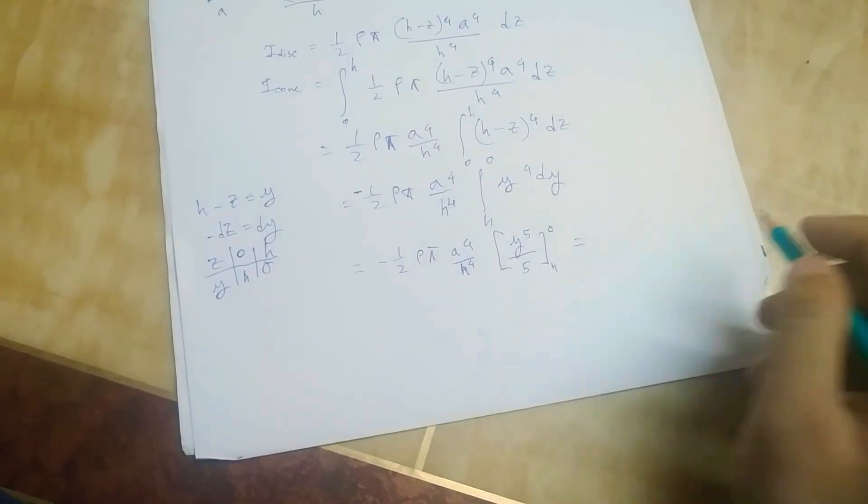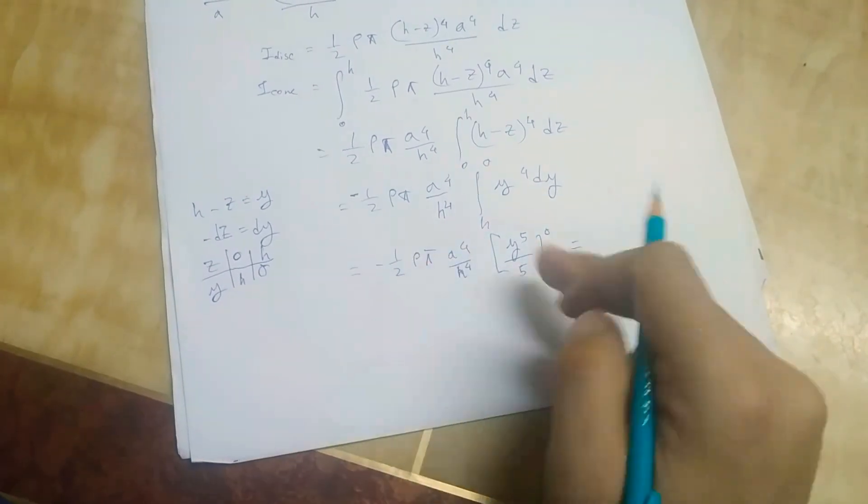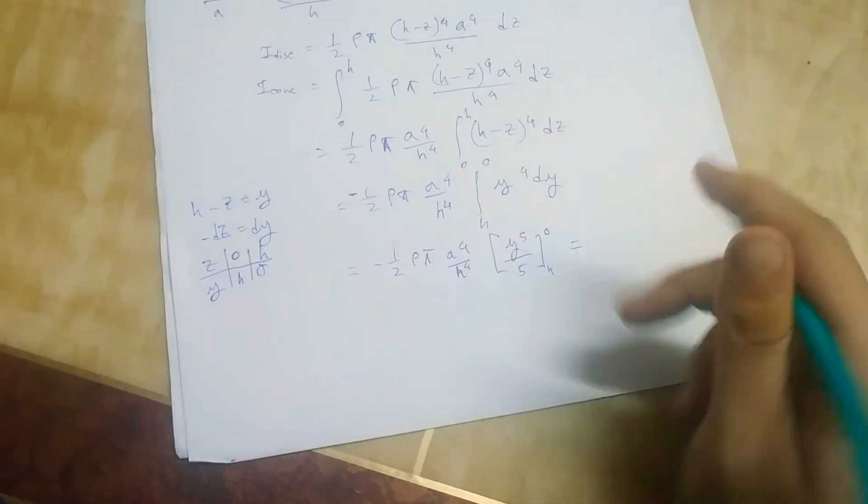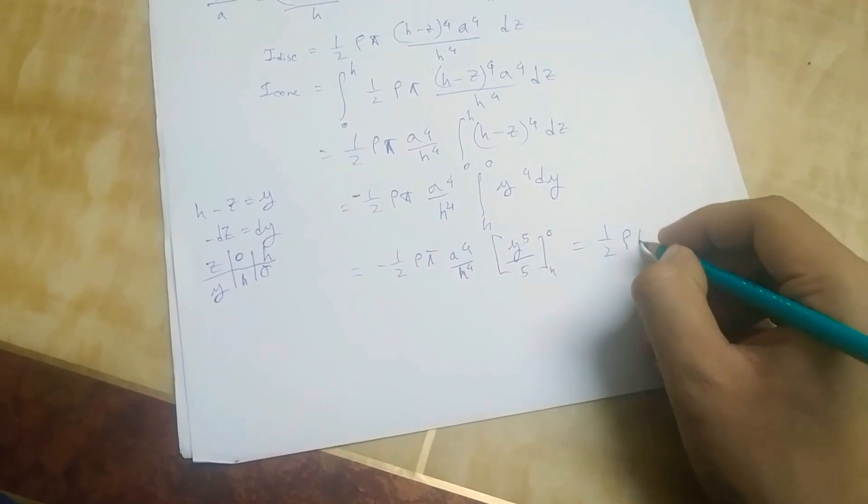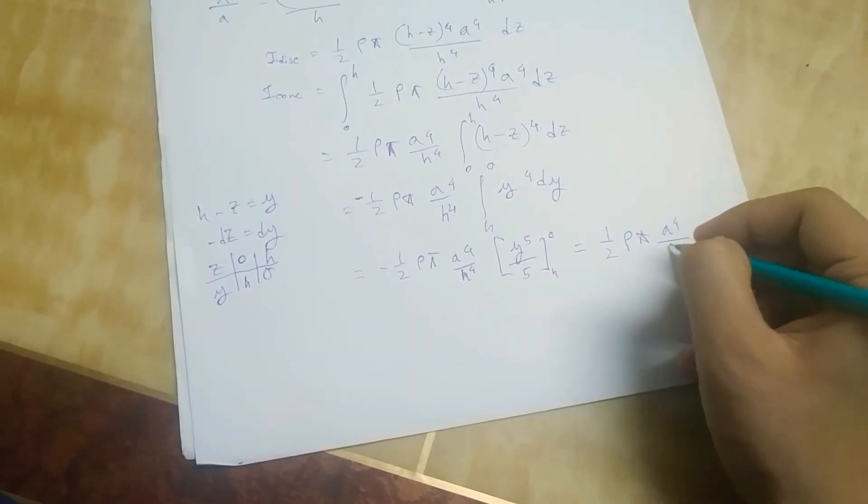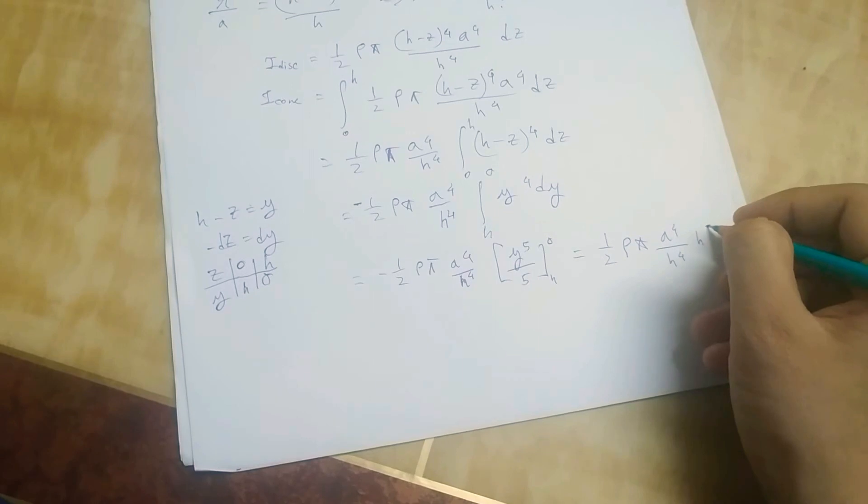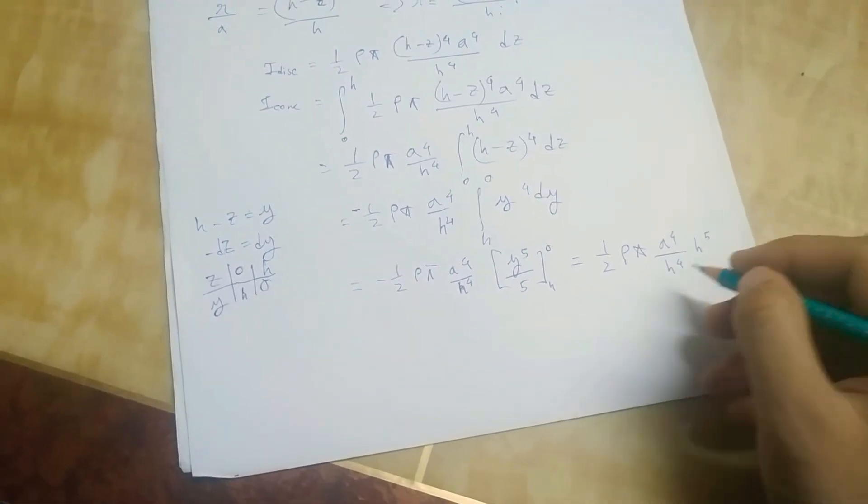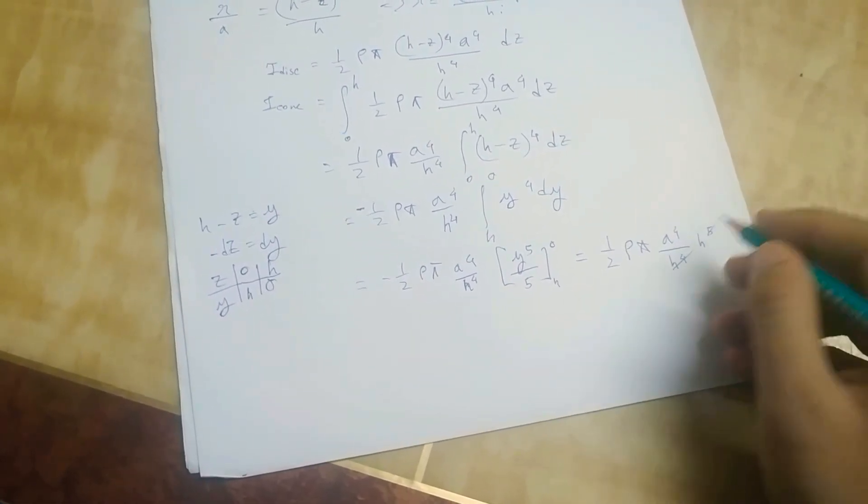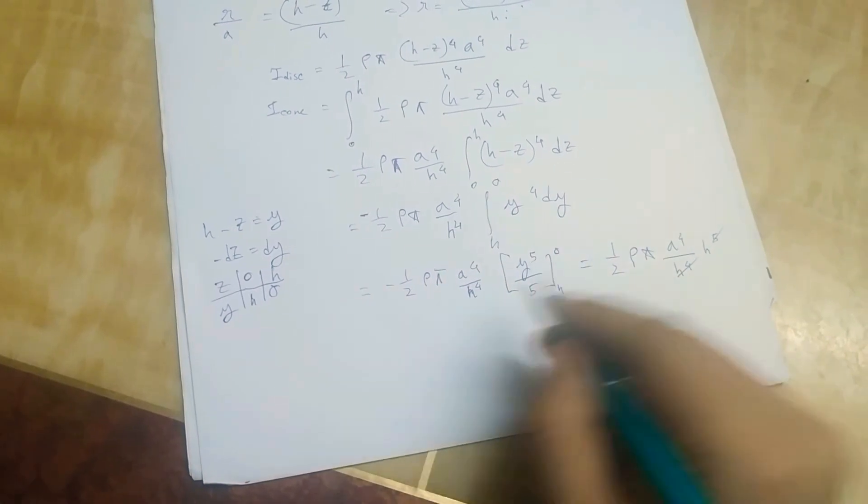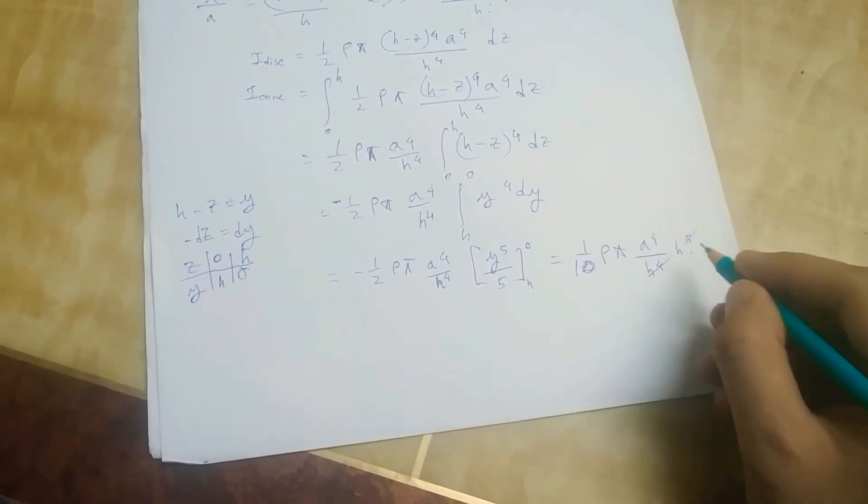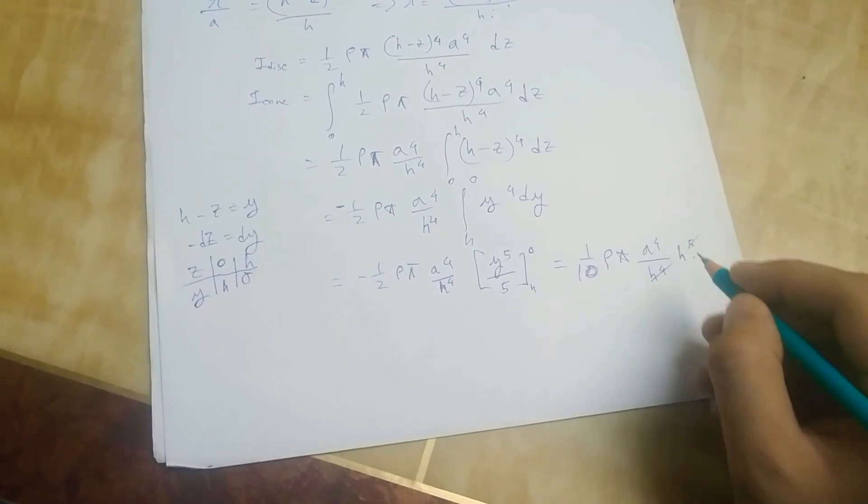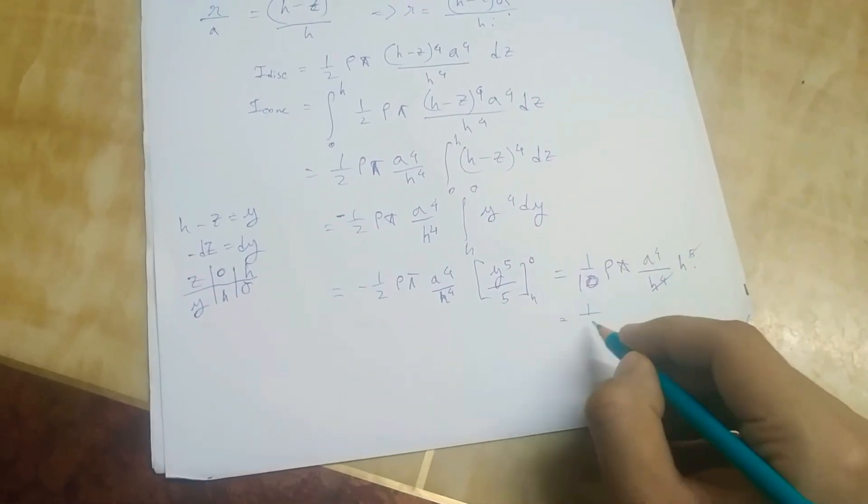Now if we do that, if we simplify that, we'll get a minus sign here and that will make this a plus sign. And we'll get this. And if we simplify, this will be multiplied, this will be 10.